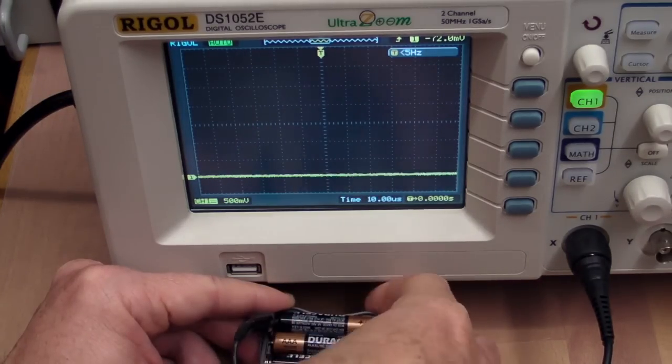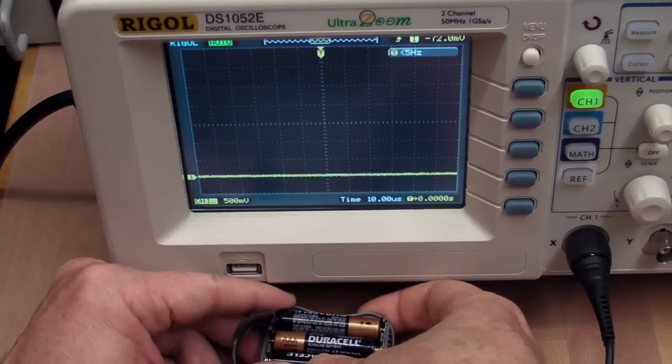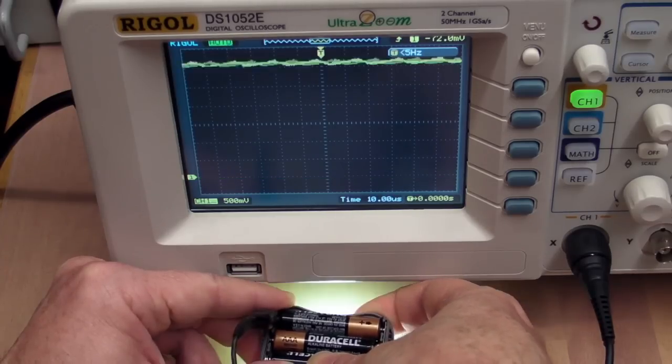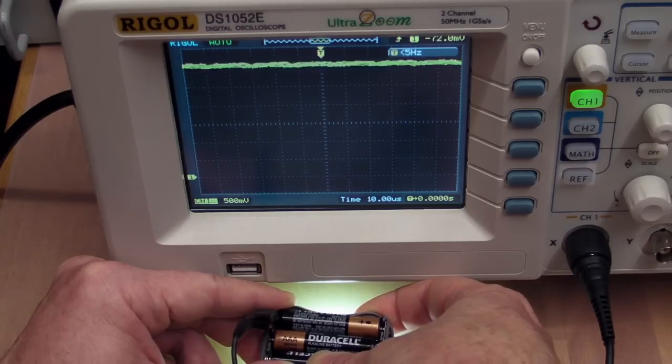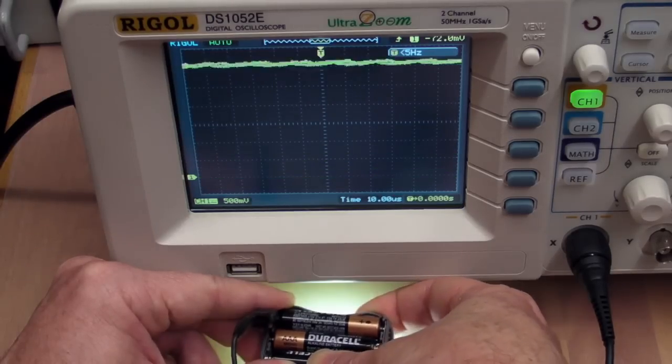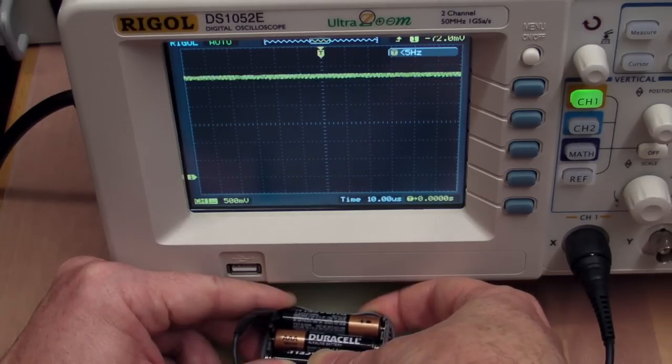Let's have a look at the LED output, shall we, on the different modes. This is the modified headlamp. And as you can see, there's not much ripple there at all. That's on high, medium, and low.